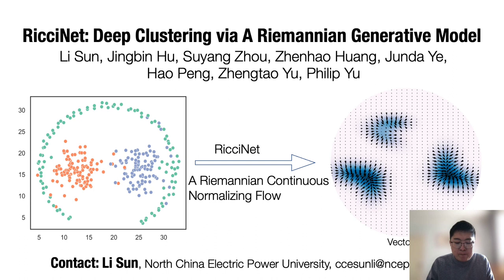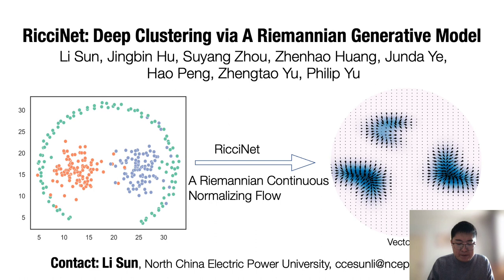To bridge these gaps, we propose a novel Riemannian generative model, RicciKnight — a neural Ricci Flow with several theoretical guarantees. The novelty is that we model the dynamic self-clustering process of Ricci Flow: data points move to their respective clusters in the manifold. Influenced by Ricci curvatures, the points' trajectories are characterized by a parametric velocity, taking the form of ordinary differential equations.